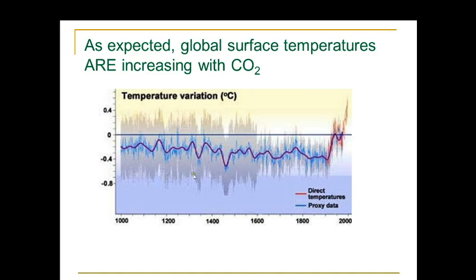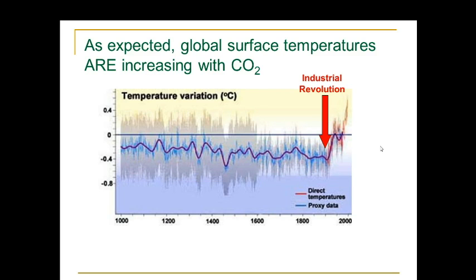Here is a graph of temperature variation. The red is a direct measurement. The blue is proxy measurements, and temperatures are going up. At this point going up was the industrial revolution, and that has led to the largest temperatures ever determined — using proxy data it's not really a recording, but hopefully you get the idea here.